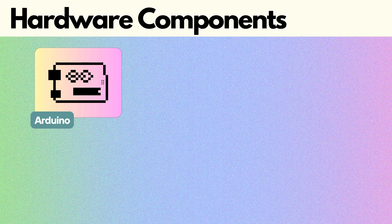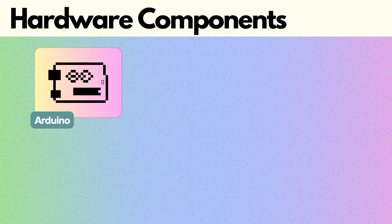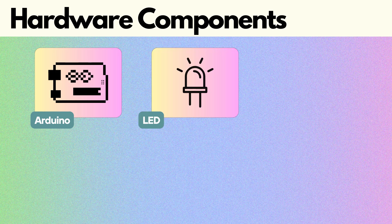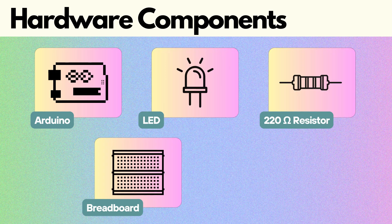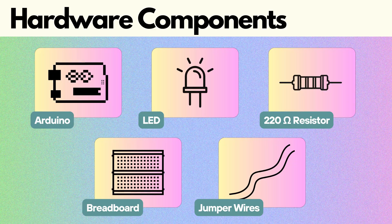So now let's talk about what you need. In terms of the hardware, you need an Arduino, an LED, a 220 ohm resistor, a breadboard, and some jumper wires.